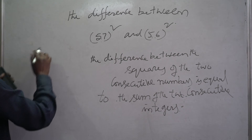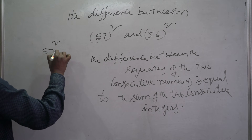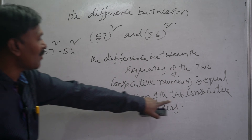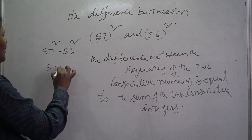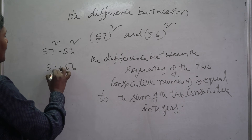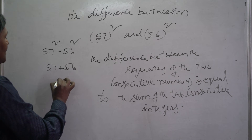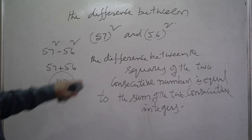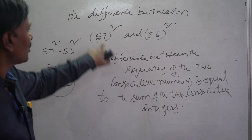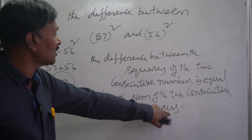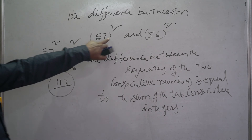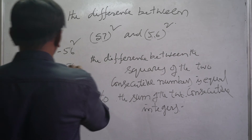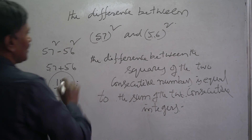Our intention is to find 57 square minus 56 square. For that, we just find the sum of the two consecutive integers: 57 plus 56 equals 113. So 113 is the answer. The difference between the squares of two consecutive integers equals the sum of those two consecutive integers — simply add the two numbers.